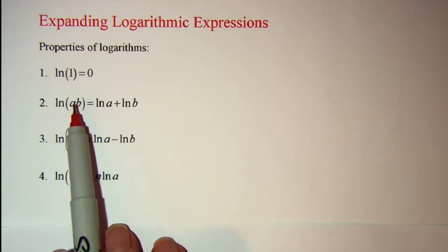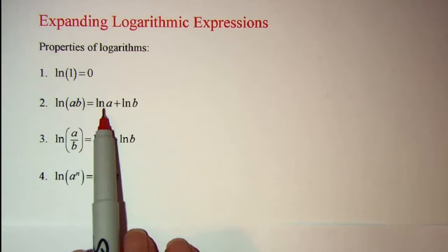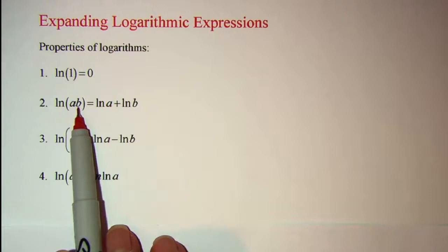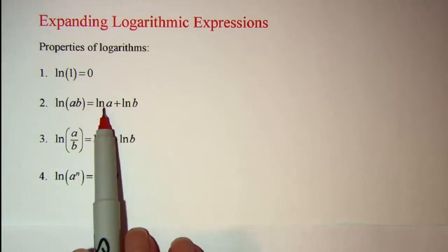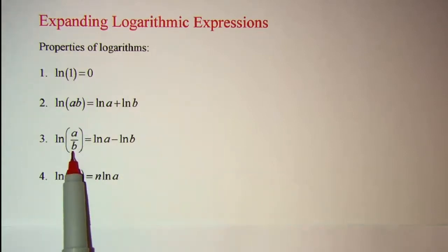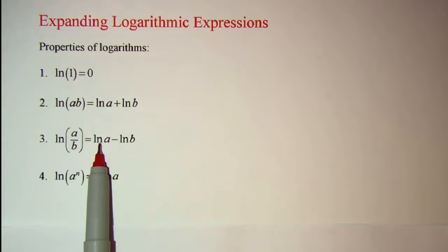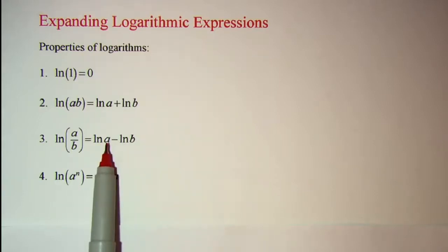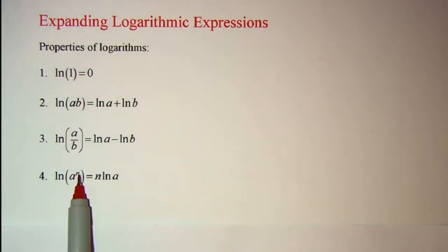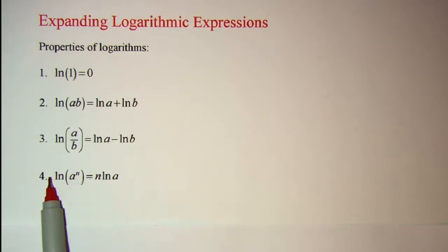If you have the log of a product, this is the way to change it to individual logarithms — the log of a product is the sum of the individual logarithms. The log of a quotient can be changed to the difference of the individual logarithms: ln a minus ln b. And if you have an exponential as your argument, you can take the n out in front and multiply it by the ln of a.